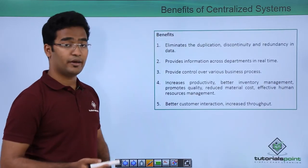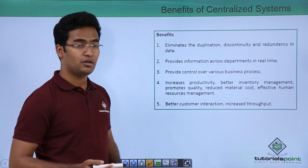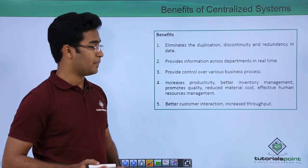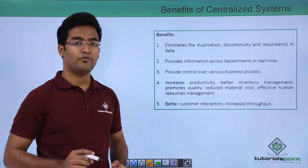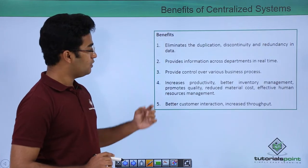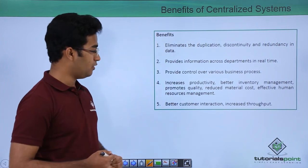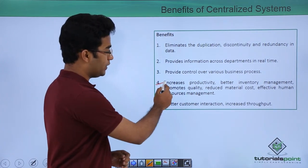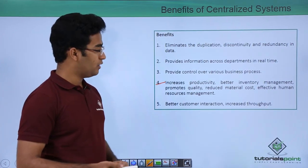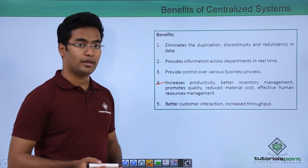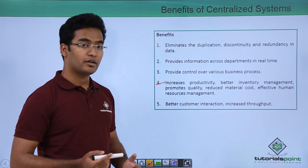The benefits of centralized systems are: it eliminates duplication, discontinuity, and redundancy in data — no more two or more databases need to be maintained, only one database is needed. It provides information across all departments in real time. It also increases productivity, enables better inventory management, promotes product quality, reduces material costs, enables effective human resource management, and results in better customer interaction and increased throughput.